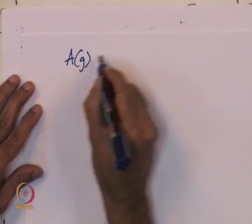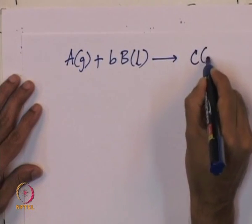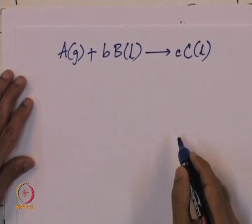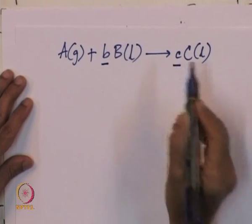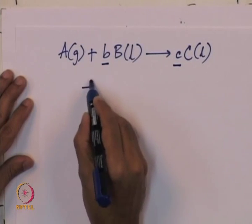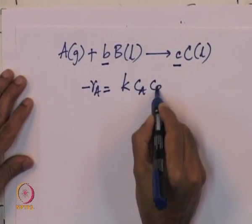The situation is something like this: there is a gaseous solute A which is getting absorbed into a liquid solution, and the liquid contains a component B with which A can react. We write the stoichiometry of the reaction as A from the gas phase reacting with B from the liquid phase giving rise to C, which remains dissolved in the liquid phase, and ν and C are stoichiometric coefficients. We shall assume that this reaction has an intrinsic rate which is first order in A and first order in B.